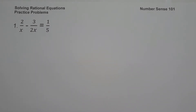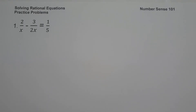For today's video, we are going to have a practice problem on how to solve rational equations and we are going to explain everything in detail. On the first example, we have 2 over x minus 3 over 2x equals 1 over 5.